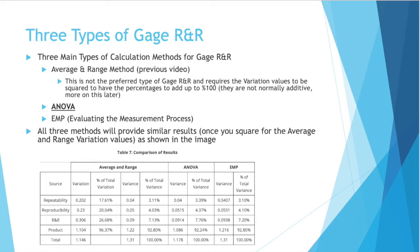The third type is EMP, evaluating the measurement process. All three methods will provide similar results. So once you square the average and range variation values, the results will be similar to ANOVA and EMP, as you can see in the table at the bottom of this slide.